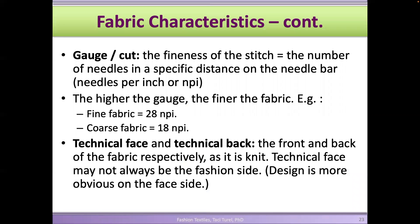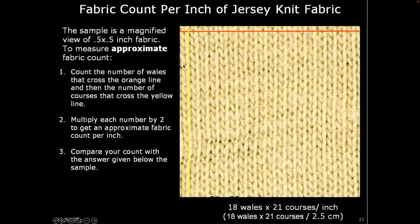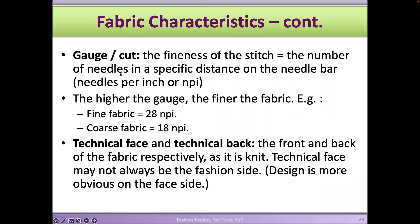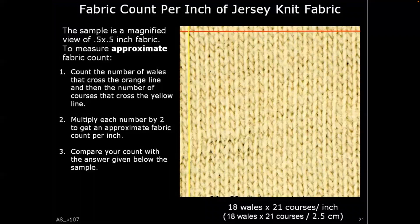The gauge of a fabric is the fineness of the stitch — it's determined by how many needles are in one inch, since each needle makes one loop. The higher the gauge, the finer the fabric. In fine fabrics you may have 28 needles per inch; in coarse fabrics, 18 needles per inch. If this is a jersey fabric, the technical face is where you see the V's, and the technical back is where you see the half circles. For design purposes, you can use the back of the fabric as the design face.